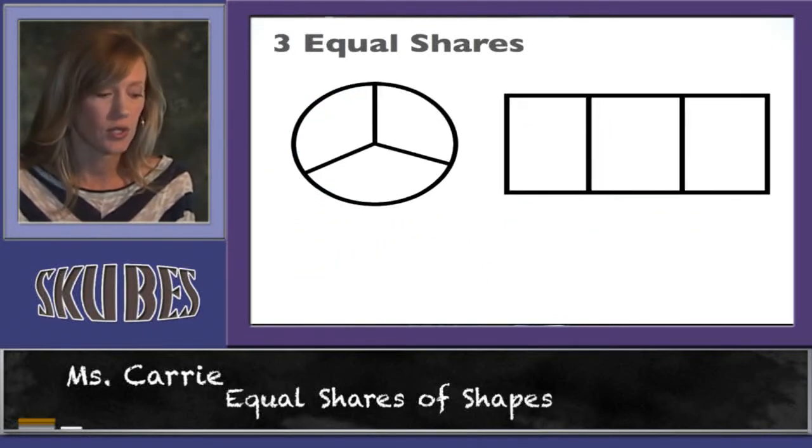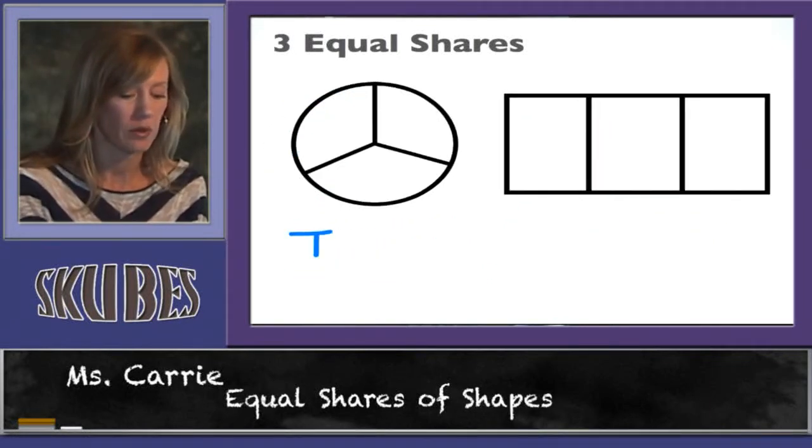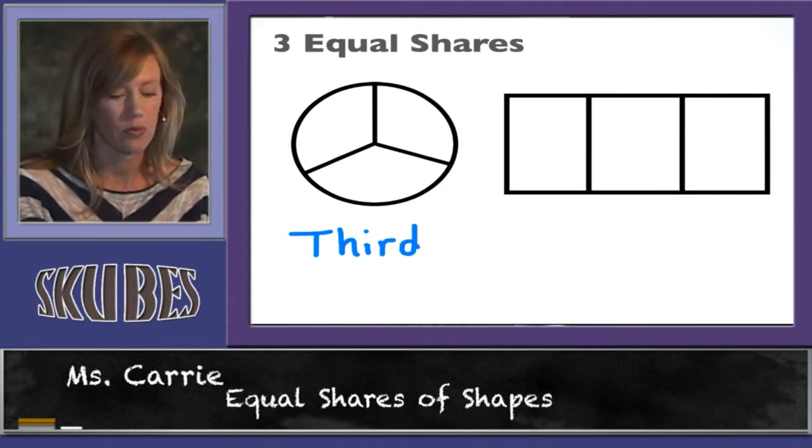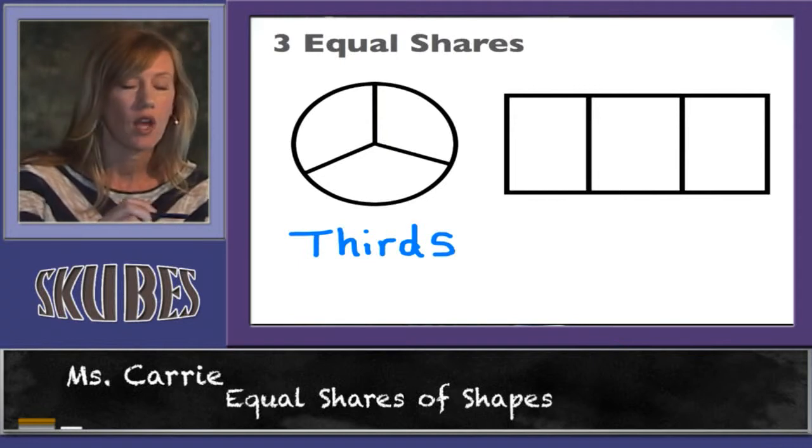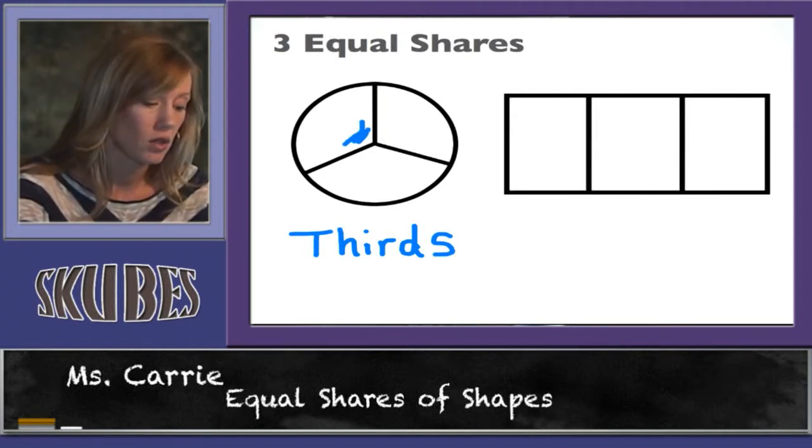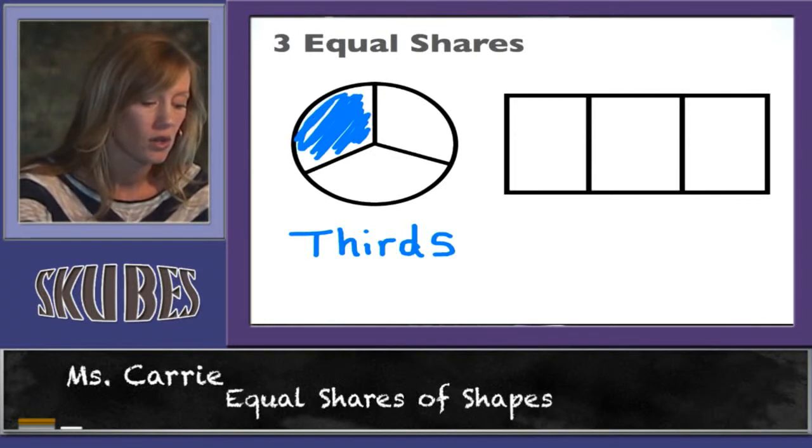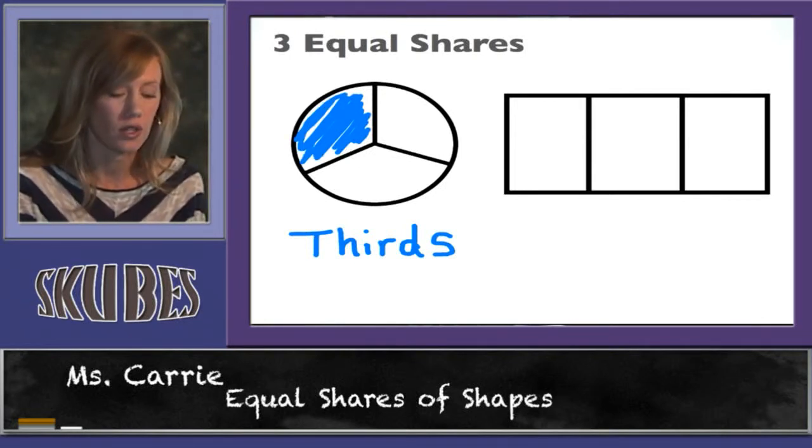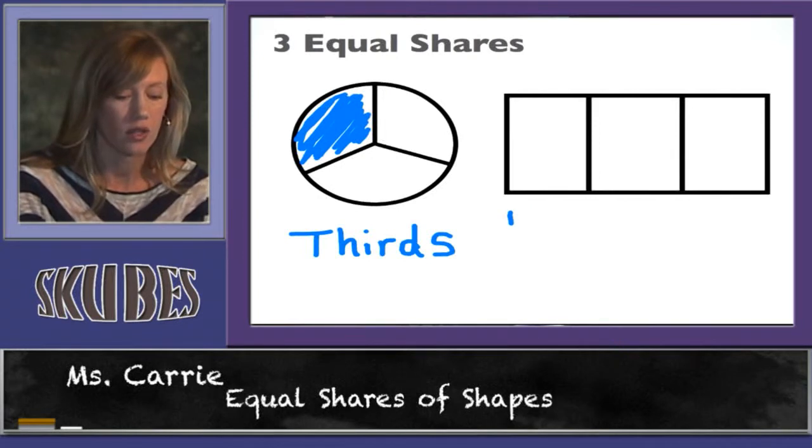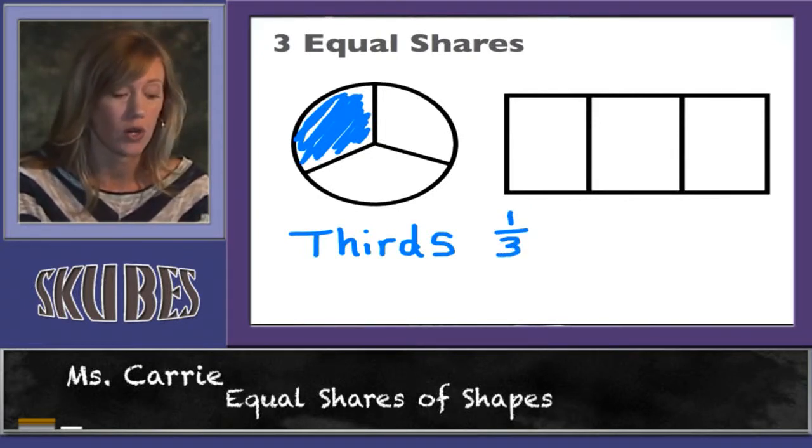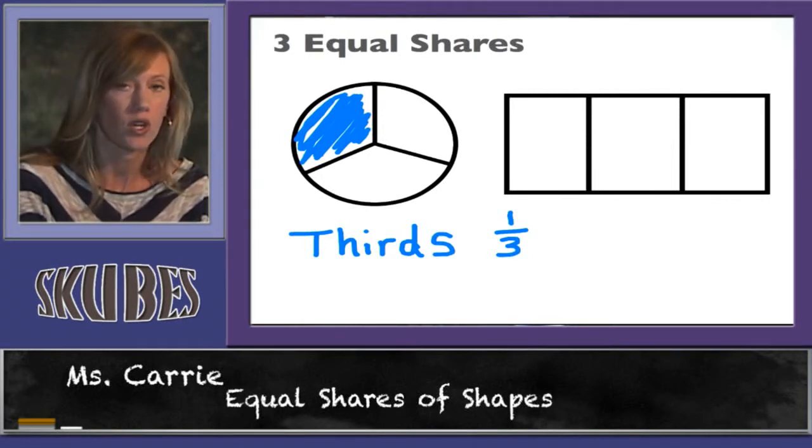Let's look at thirds. This is how we write thirds. These shapes are divided into three parts and we call them thirds. If we decided to color one part of this third, we would have colored one third. The number on top is the number colored. Draw your line. The number on the bottom is the total amount of parts, which was three. That's one third.